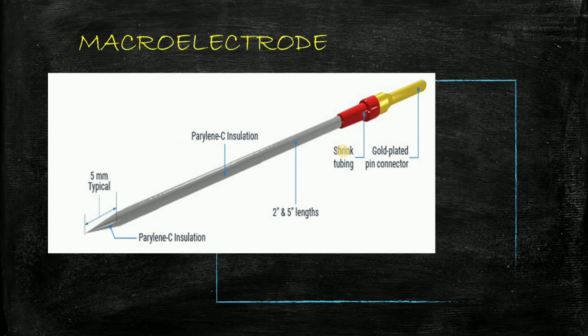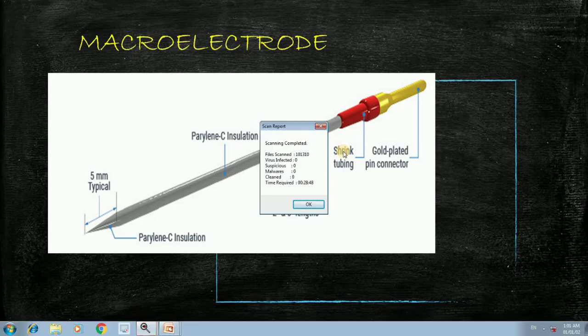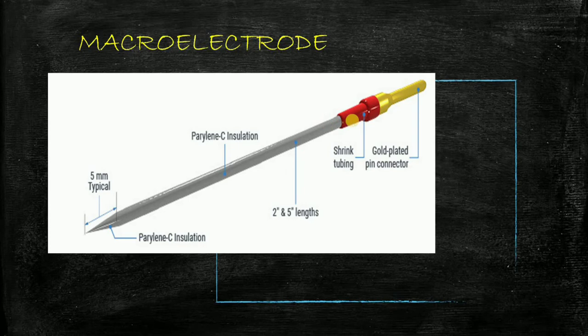Next are macroelectrodes. They are one type of concentric needle electrodes. As the name suggests, it has 15 mm shaft of needle. It records from a large number of motor units along the shaft of a needle. You can see in this picture there is a macroelectrode.